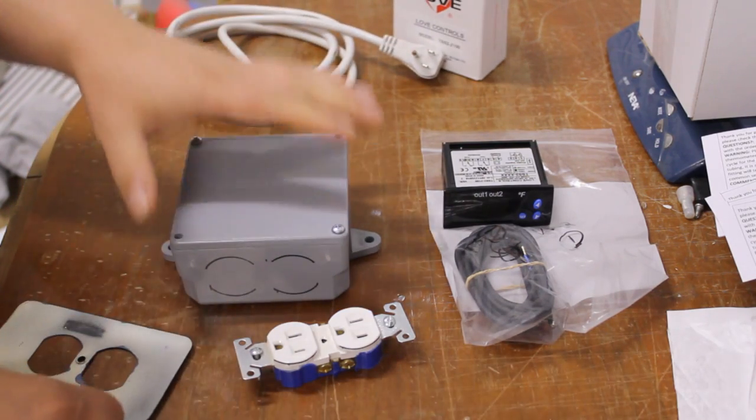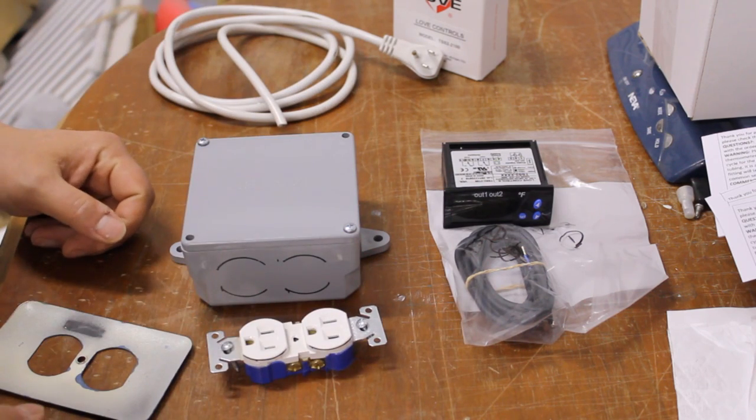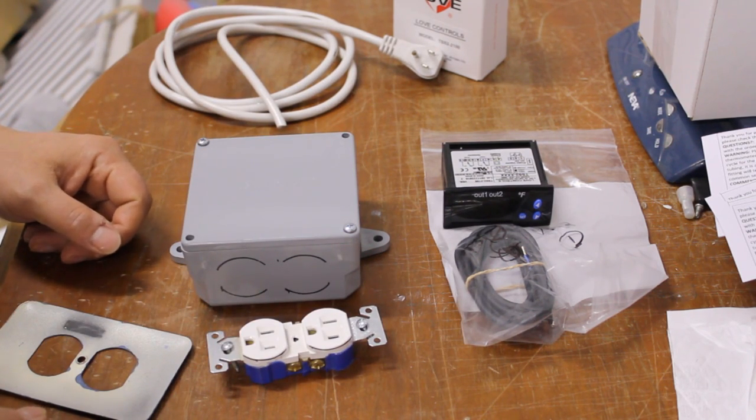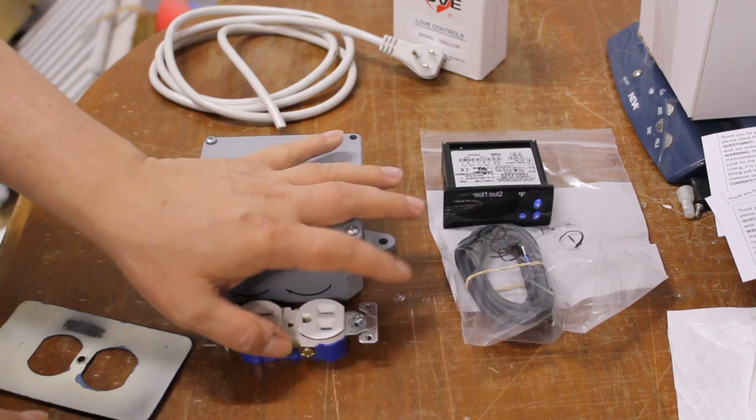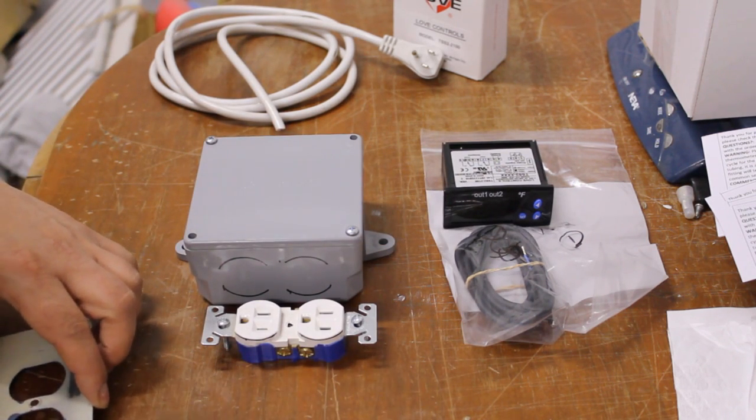So I just basically took 12 bucks off of the project. So now I'm left with basically $7, $8 maybe completely for that. So, overall the project is still within the bounds of a dual-stage RANCO controller.